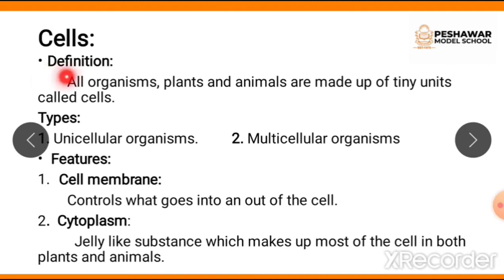We will start discussing our first topic: cells. We will go through the definition first. As we all know, living things on Earth — from the tiniest creatures to the tallest trees — are made up of microscopic parts. These microscopic parts are called cells, or you can say that tiny units are called cells. The definition: all organisms, plants and animals, are made up of tiny units called cells. Organisms are of two types: unicellular organisms and multicellular organisms, but we will discuss that later.